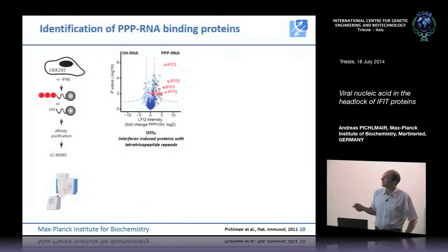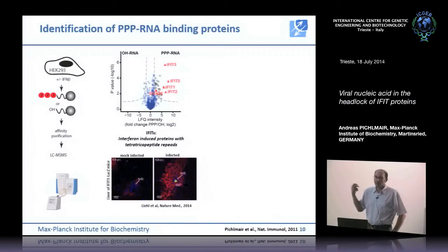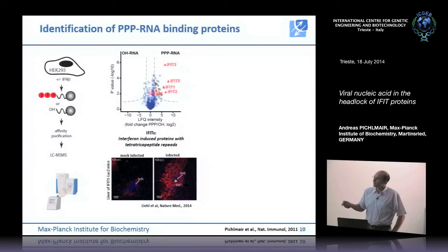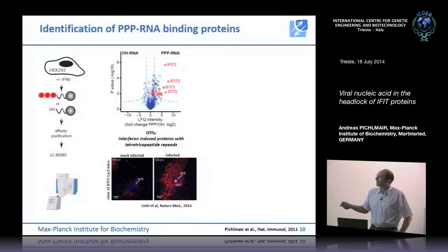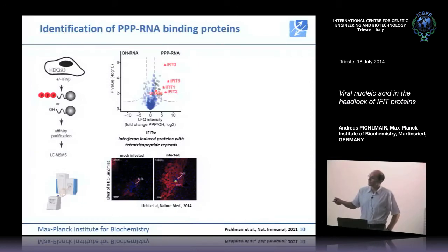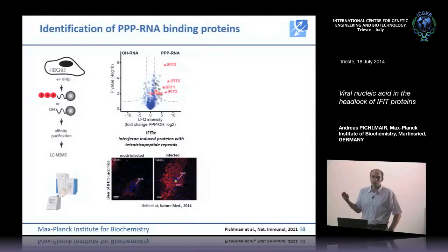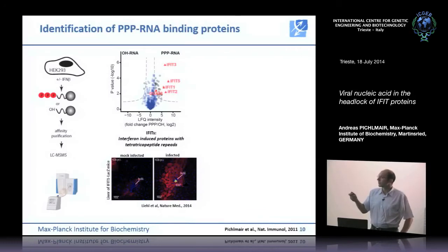What was already known was that these are highly interferon-stimulated proteins. In livers of mice infected with an interferon-stimulating agent, shown here in green, in the vicinity of the infection event you can see IFIT protein production going up, clearly showing that IFIT proteins are very sensitive and highly induced proteins.